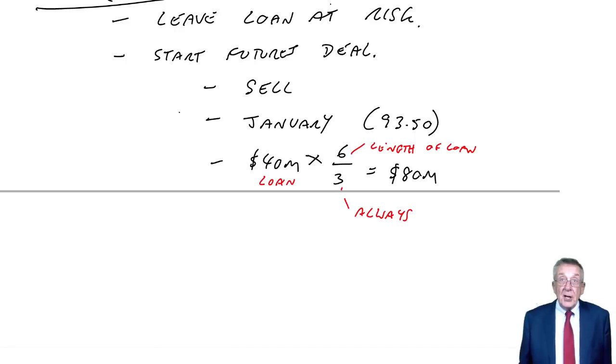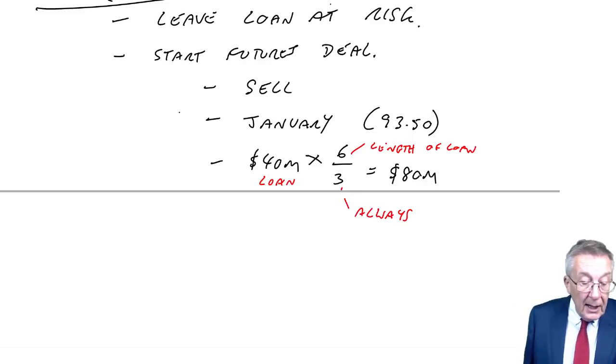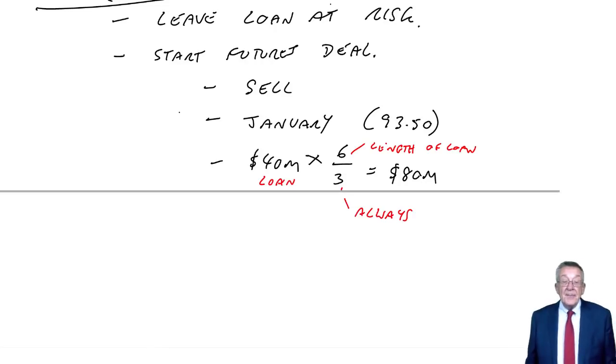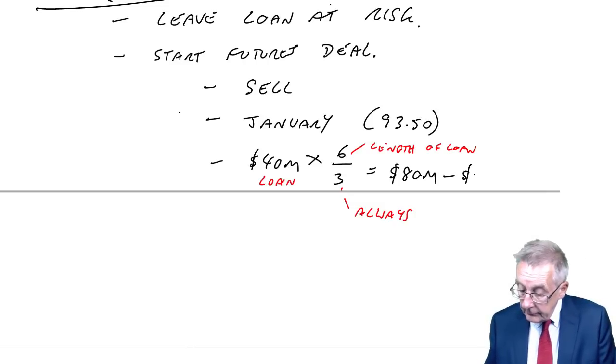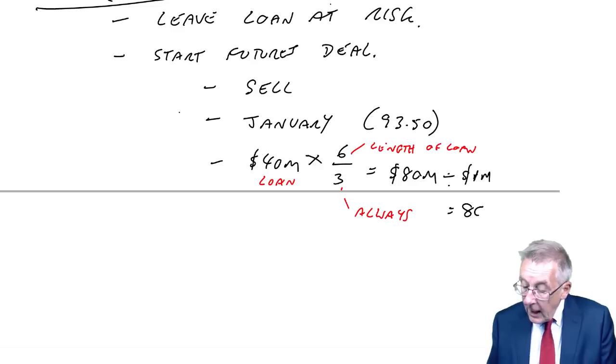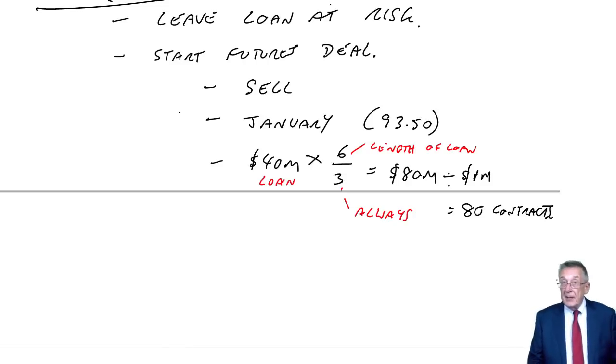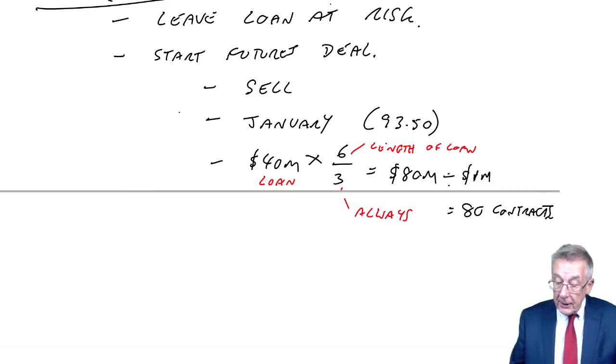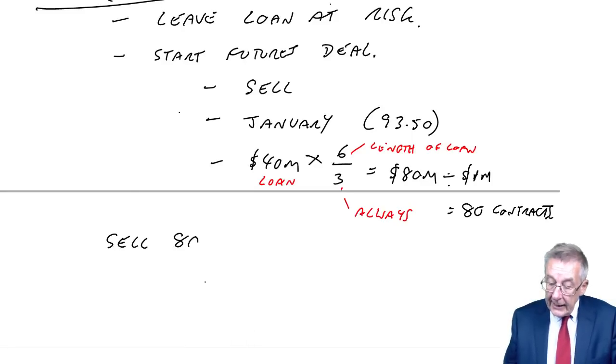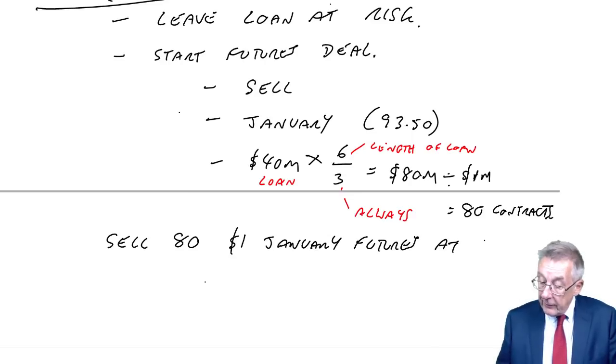But you can only deal in fixed-size contracts. You'll always be given the contract size. Here it tells us that the contract size is £1 million. And here it divides exactly, so we will deal in 80 contracts. If it didn't divide exactly, you'd round to the nearest number of contracts, which means it may be a bit more or a bit less than what's actually needed, but it has to be in whole-size contracts.